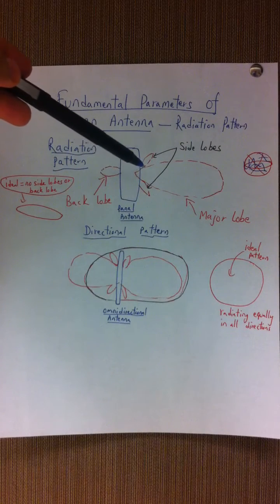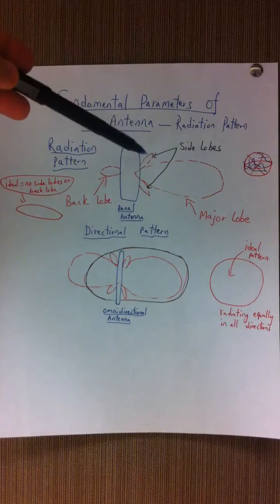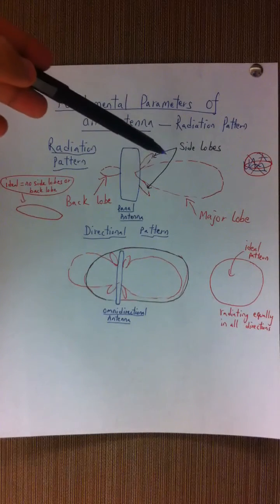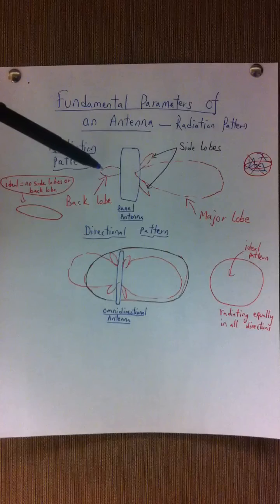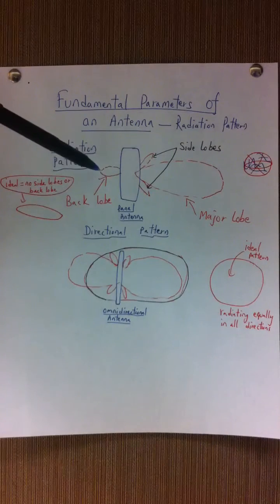Now you also have some radiation on the sides, and these are called side lobes. You will also have some radiation on the back of an antenna; this is called the back lobe.